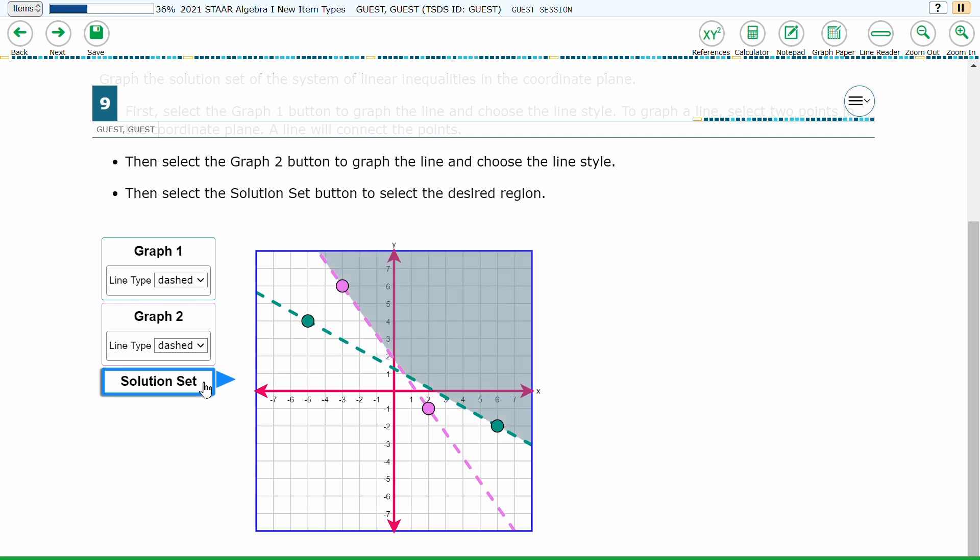The solution area will turn a dark gray once chosen. Once an area has been selected, if the student wishes to choose another area, they must re-click in the original area first in order to be able to choose a different area for their solution.